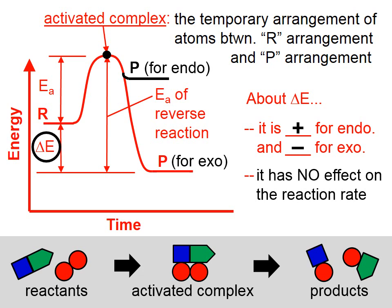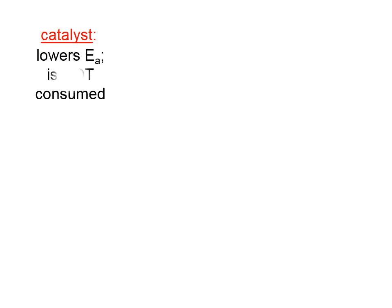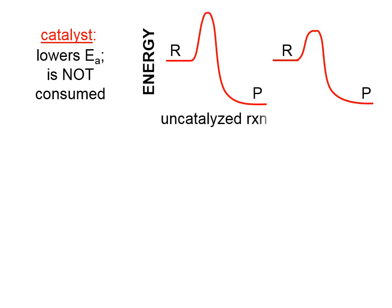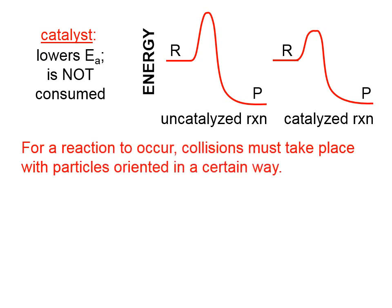The change in internal energy has no effect on the reaction rate. No matter how big or small delta E is, we can gather no information from that as to how fast this reaction takes place. A catalyst will lower the activation energy, is not consumed, and causes a reaction to speed up — because the activation energy is lower.